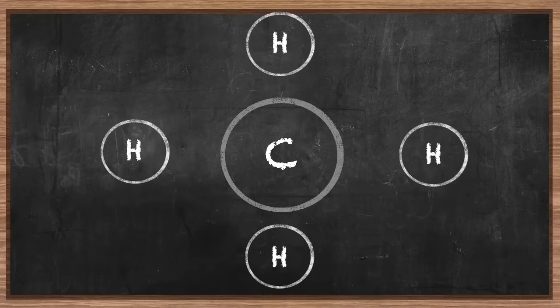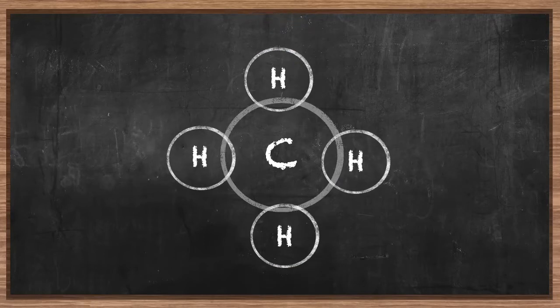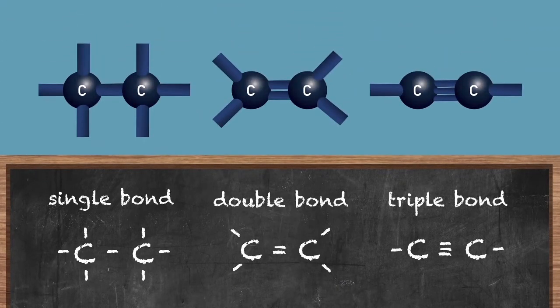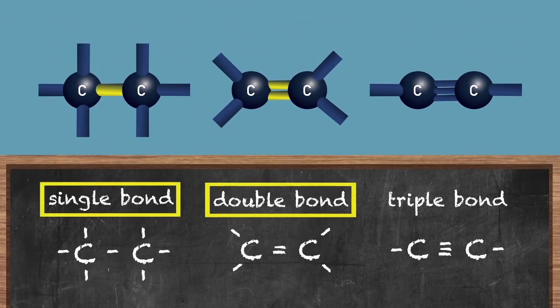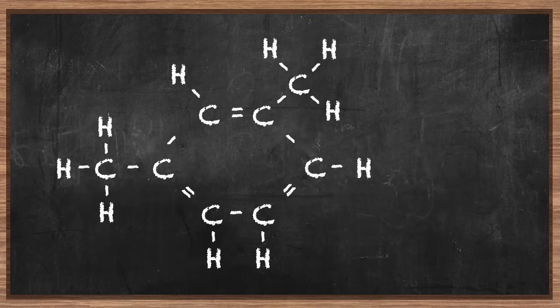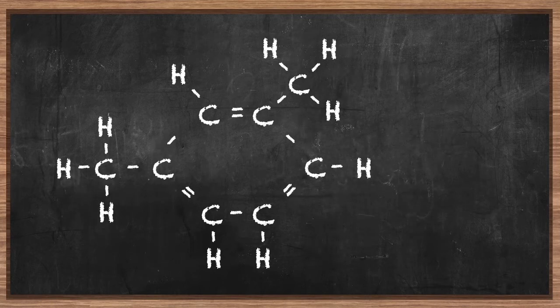Carbon can make four covalent bonds with other molecules. This enables carbon to make single, double, and triple bonds with itself and form long carbon chains. The chains can even loop back on themselves and form carbon rings.